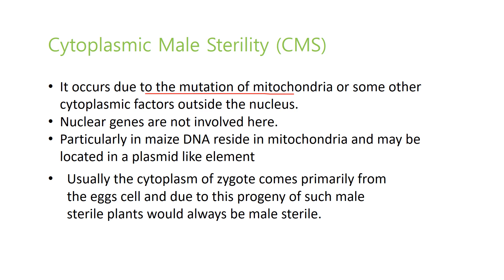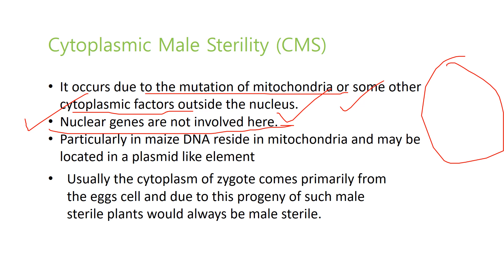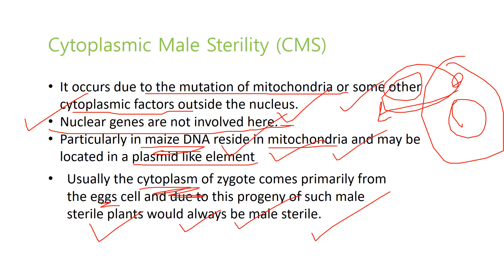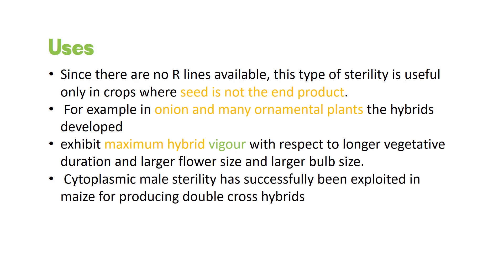Cytoplasmic male sterility occurs due to mutations of the mitochondria or cytoplasmic factors outside the nucleus. The recessive gene is present outside the nucleus and nuclear genes are not involved. In maize, this DNA resides in the mitochondria and may be located in a plasmid-like element. The cytoplasm of the zygote comes primarily from the egg cells, so the progeny of such male sterile plants will always be male sterile.